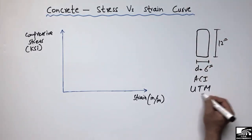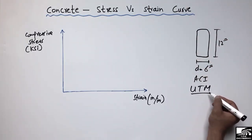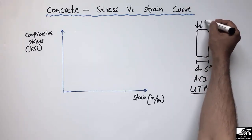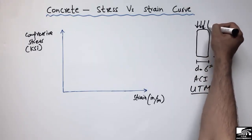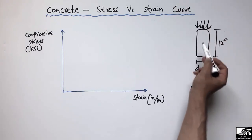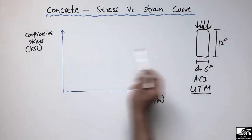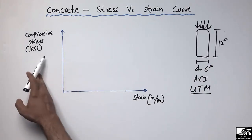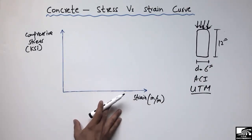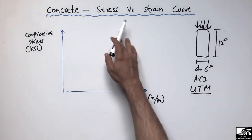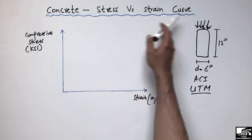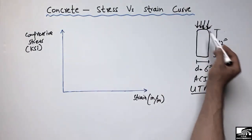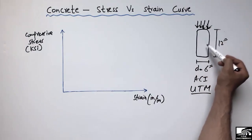After gaining enough strength, we place this concrete cylinder in the Universal Testing Machine (UTM) and perform a compressive test on it. By performing this test we get a curve between the compressive stress and strain, and this curve is known as the stress versus strain curve for the concrete material.